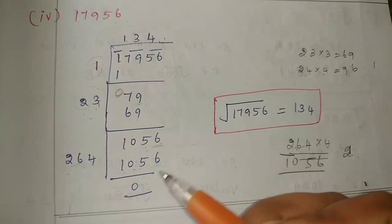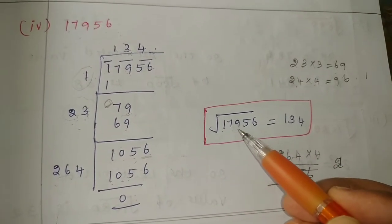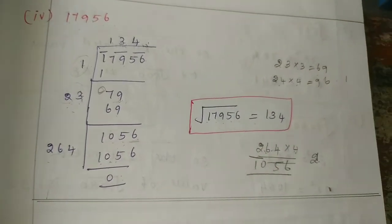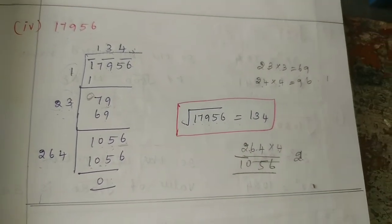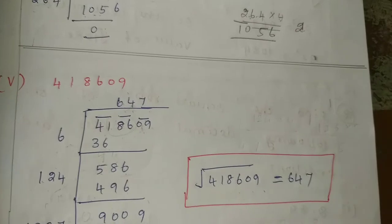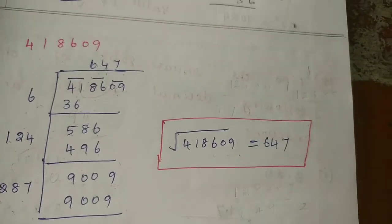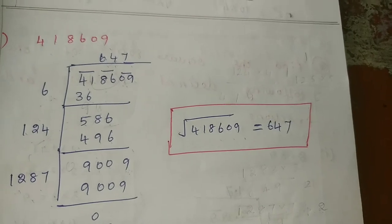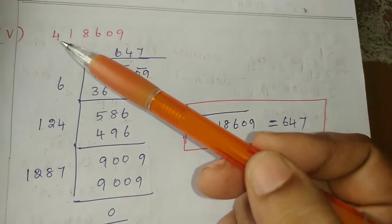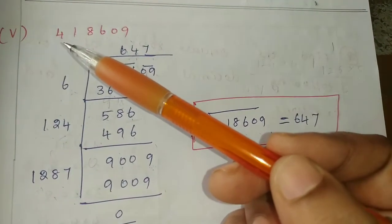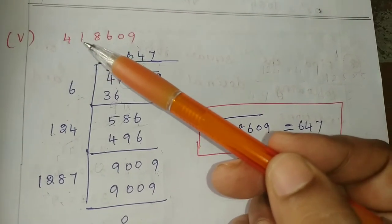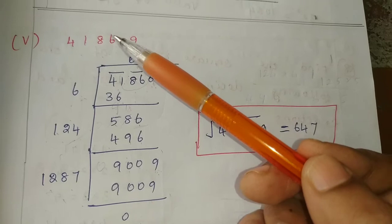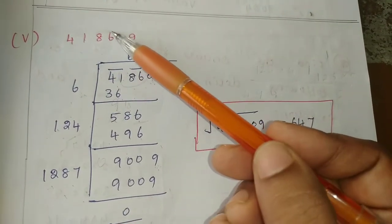So the square root of 19756 is equal to 134. Clear? Next, the fifth problem is 418609. The answer has 1, 2, 3, 4, 5, 6 digits — so 5 digits. It is equal to 1261.